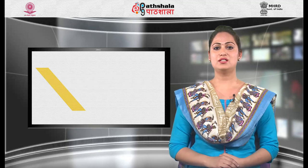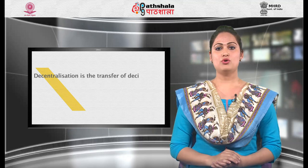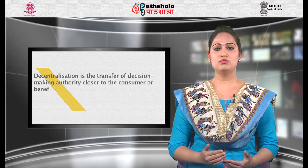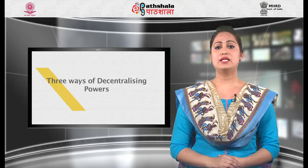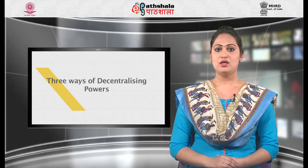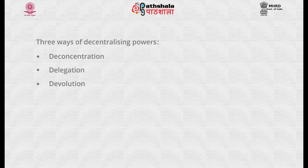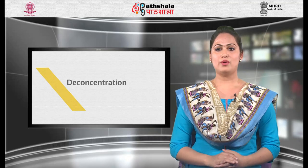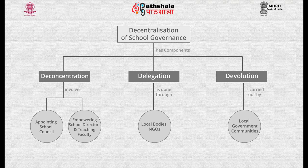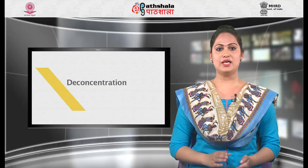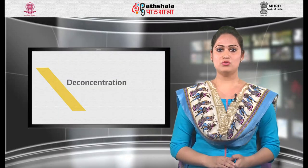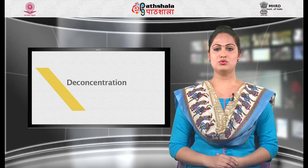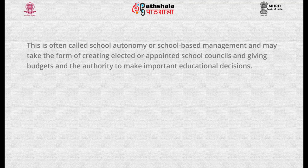In technical words, we can define decentralization as transfer of decision-making authority closer to the consumer or beneficiary. There are mainly three ways of decentralizing powers, namely deconcentration, delegation and devolution. Deconcentration refers to transfer of administrative functions through the relocation of central administrative bodies to different geographical areas. A popular form of deconcentration in education is to give additional responsibilities to schools, often called school autonomy or school-based management, which may take the form of creating elected or appointed school councils and giving budgets and authority to make important educational decisions.